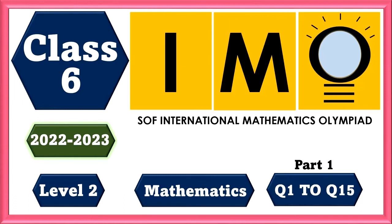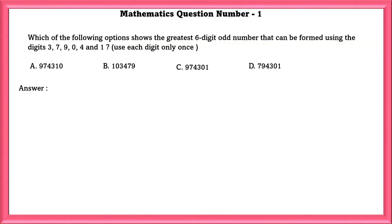Class 6 IMO Level 2. Mathematics Question Number 1: Which of the following options shows the greatest 6 digit odd number that can be formed using the digits 3, 7, 9, 0, 4 and 1, using each digit only once? The greatest 6 digit odd number that can be formed using the digits is 974301.